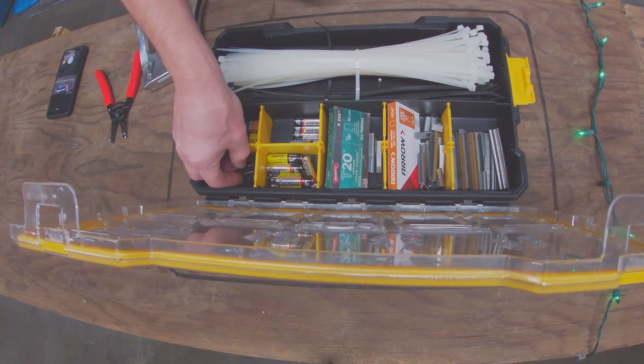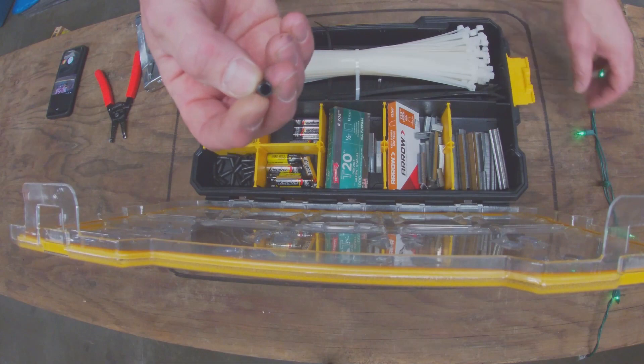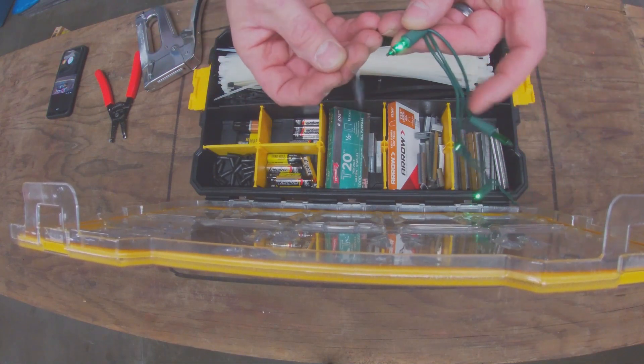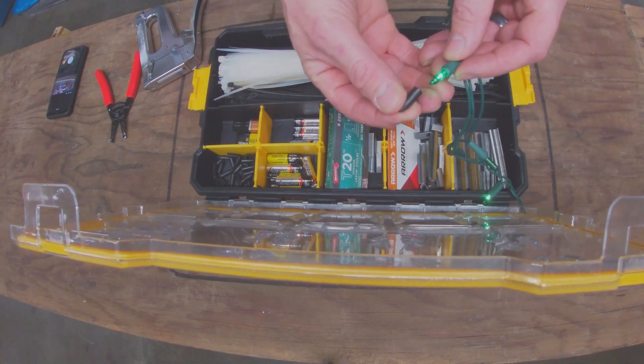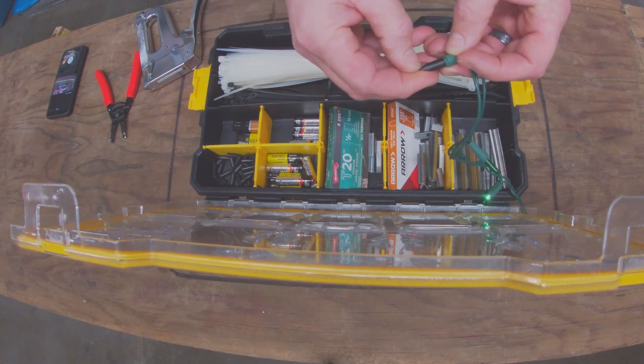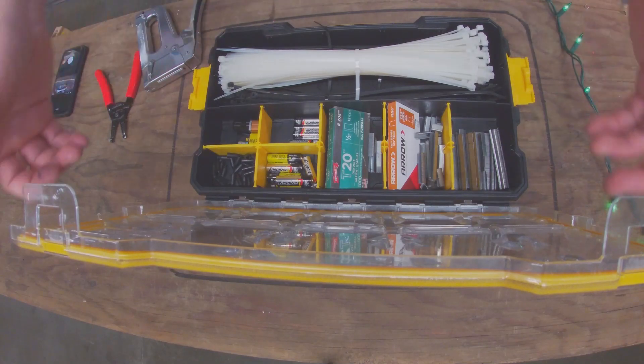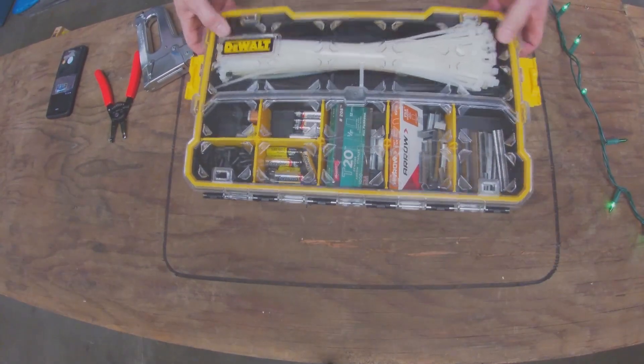Other things we'll get to later are these things called blackout caps. You can kind of see that they actually fit over the bulb and black out the bulb, and we'll explain the purpose of that later.